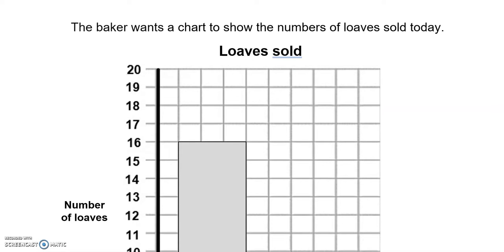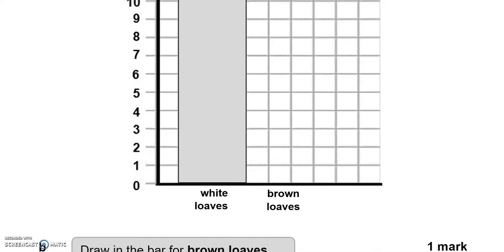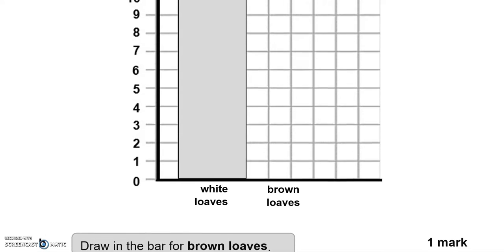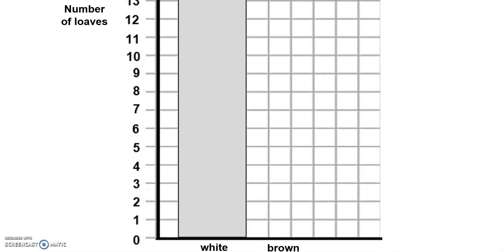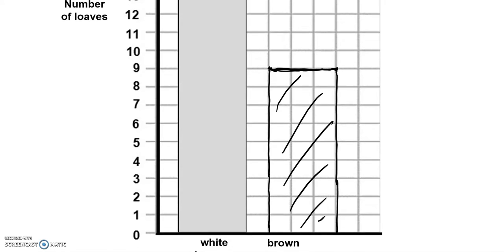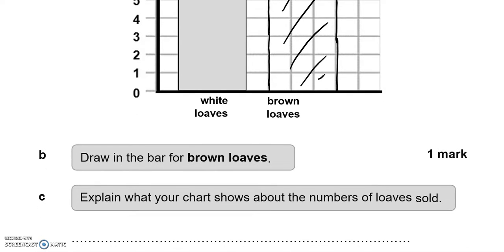The baker wants a chart to show the numbers of loaves sold today. We've got number of loaves: white loaves and brown loaves. The question is drawing the bar for brown loaves. So I'm going to leave a gap of 1 square, and I'm going to go up to 9 because that's how many brown loaves were sold. Joining the dots now.